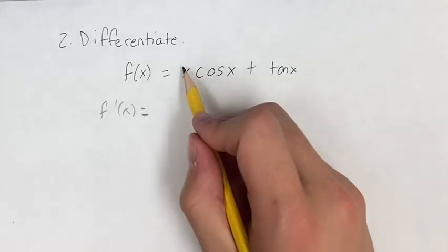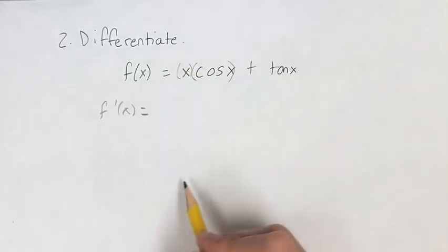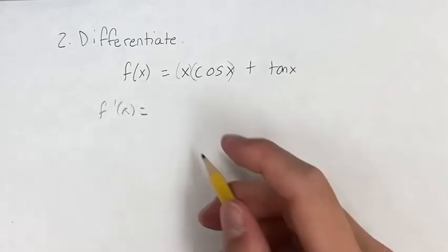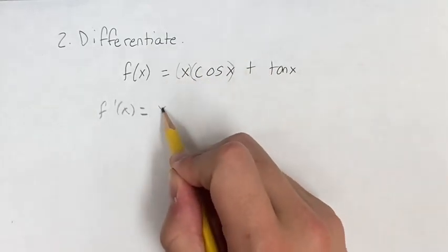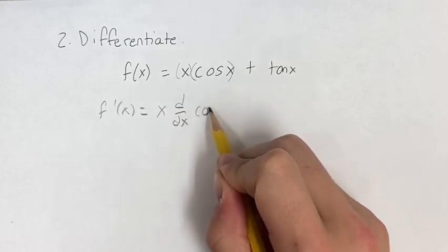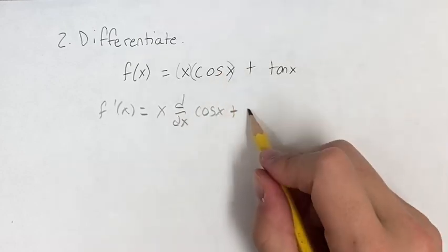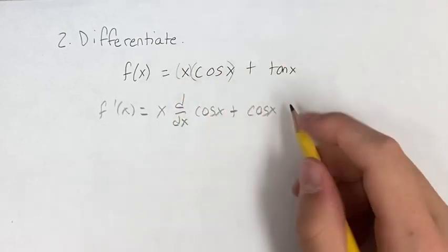For this term, we're going to have to use the chain rule, because we have two things multiplied by each other, where we have to take the derivative of each. So we're going to have the first times the derivative of the second plus the second times the derivative of the first.